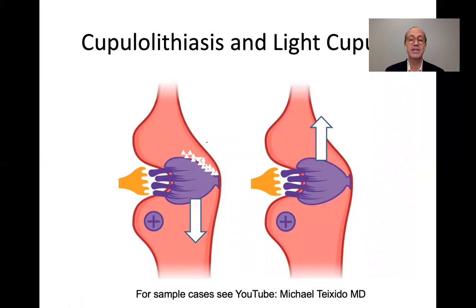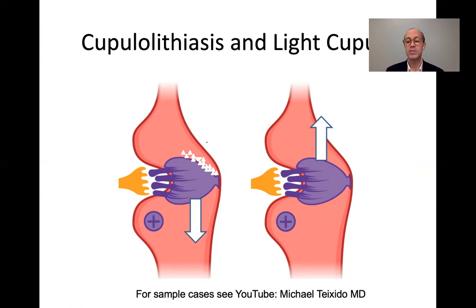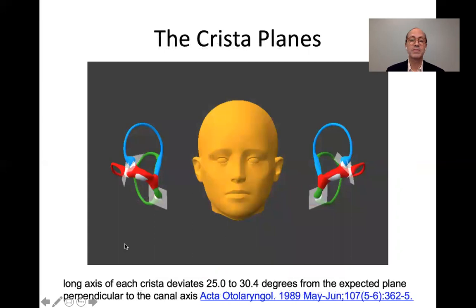Another problem that occurs is a light cupula. Just as with alcohol positional nystagmus in which the cupula is floating, we see in some patients that the cupula is floating, and this can happen with any cupula. This is generally associated with patients with vestibular migraine when they are symptomatic at the time of presentation. In order to interpret the eye movements associated with the cupula, we need to know the planes of the cristae, which can be visualized on a screenshot taken from the viewer.